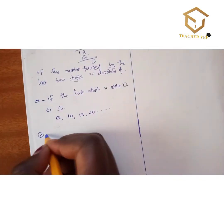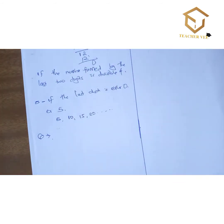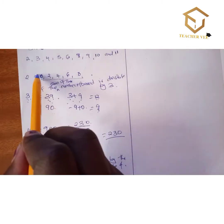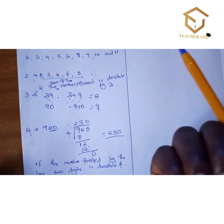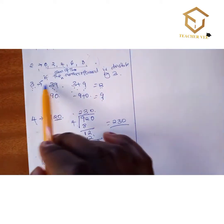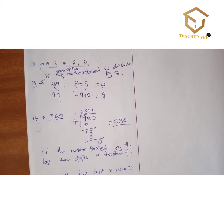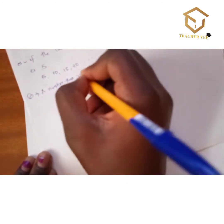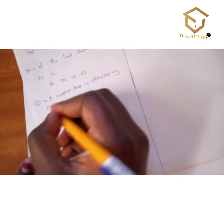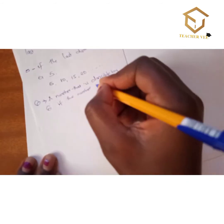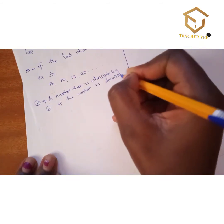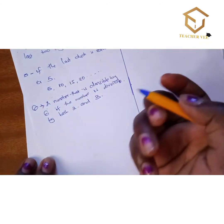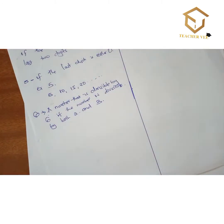Divisibility test of 6: a number is divisible by 6 if it is divisible by both 2 and 3. We said a number is divisible by 2 if its last digit is even, and divisible by 3 if the sum of its digits is divisible by 3. So for divisibility by 6, you apply both tests together.